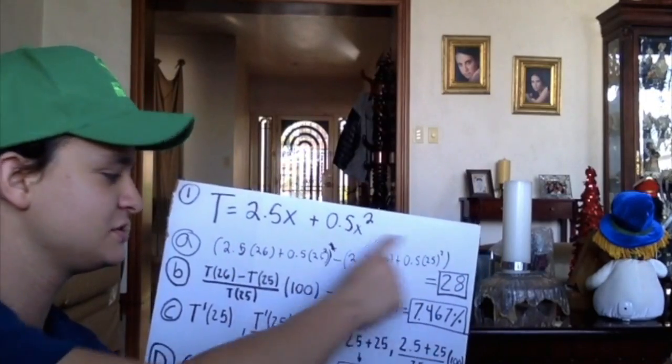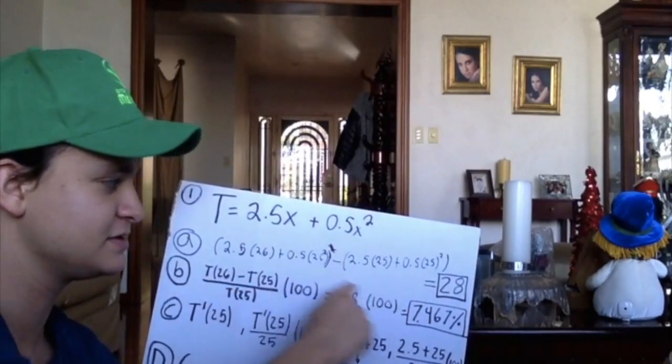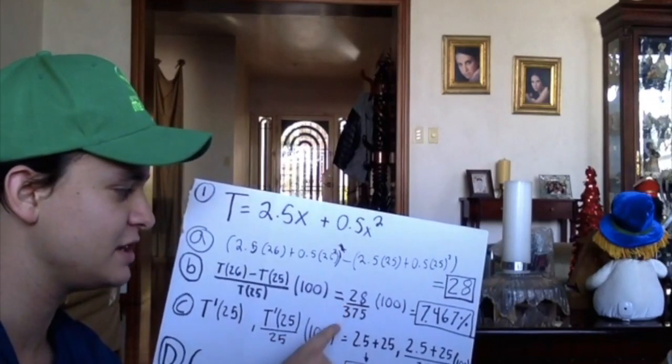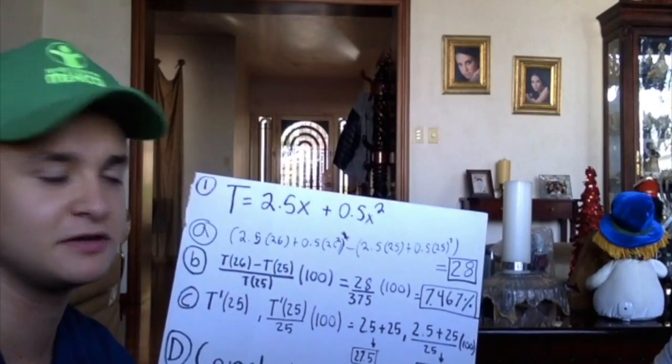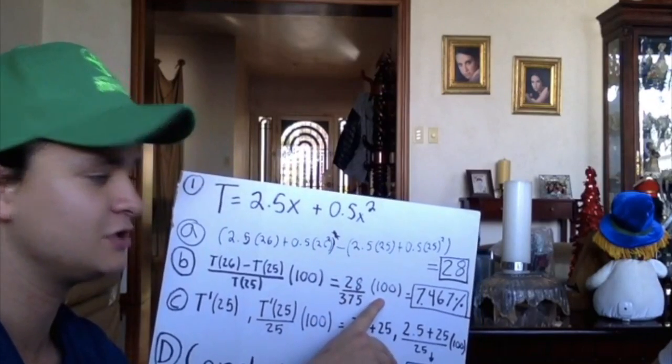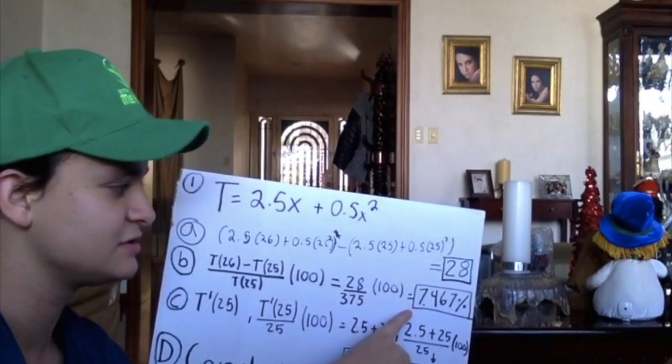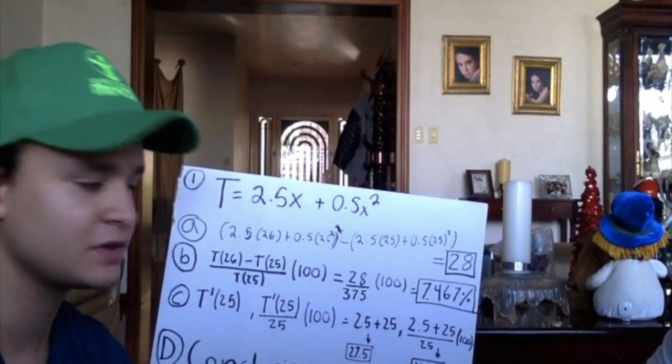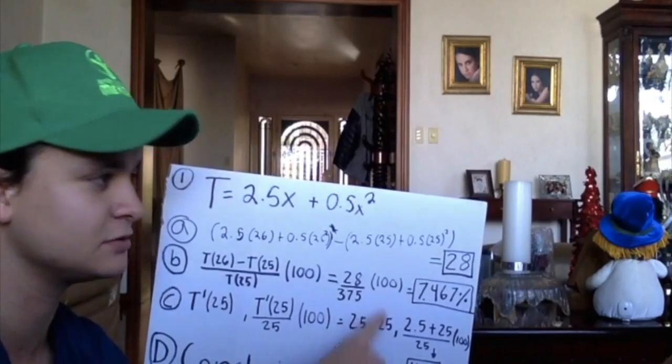So when we do that, that is this equation over this equation, we get 28 over 375. When we divide that and multiply it by 100, it gives us 7.467. And we have to multiply by 100 to give the percentage.